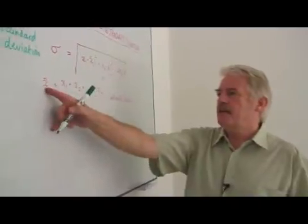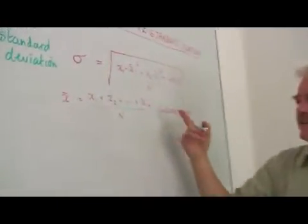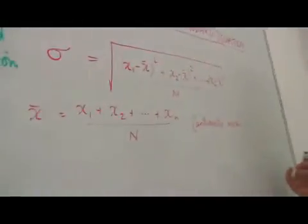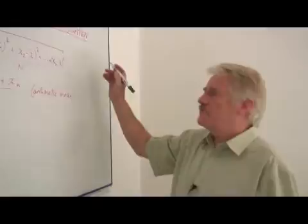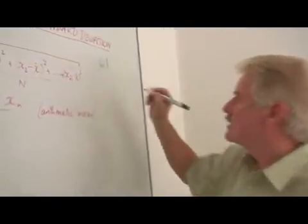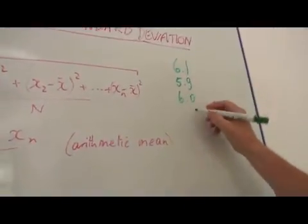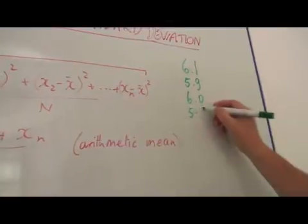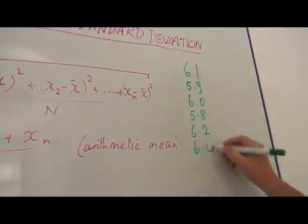The arithmetic mean x̄ is x₁ plus x₂... Now these x's are the different things we've measured. If I now do a series of readings in an experiment, I get a series of readings that look like 6.1, then 5.9, then 6.0, then 5.8, then 6.2, and then 6.0 again.